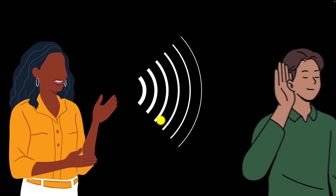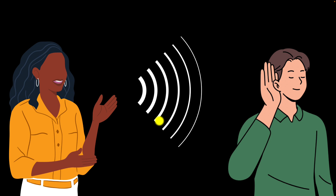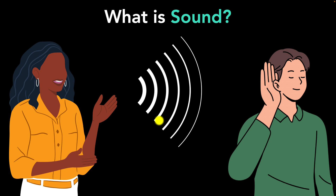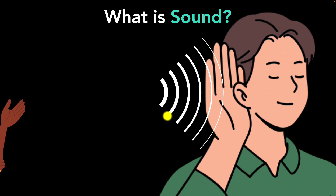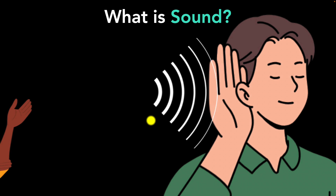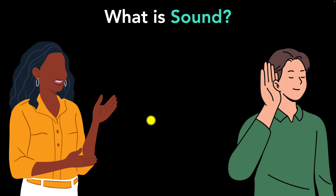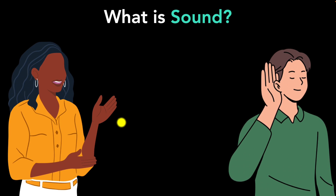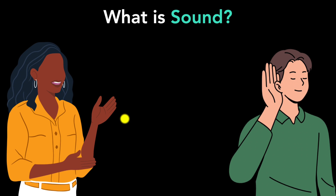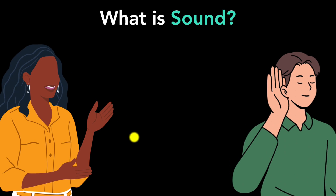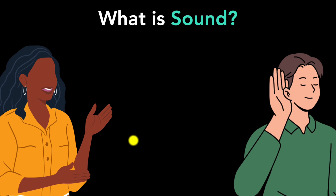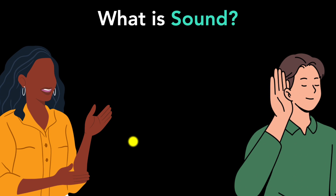When you sing, you create sound that others can hear. But what exactly is sound? How do your vocal cords create it? How does it move into someone's ears? How fast does sound move? Are there sounds that humans cannot hear? And how can sounds be used to detect obstacles or even create medical images? Let's find out the answers.